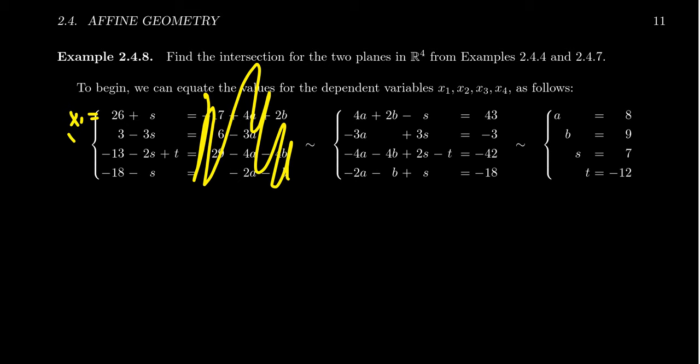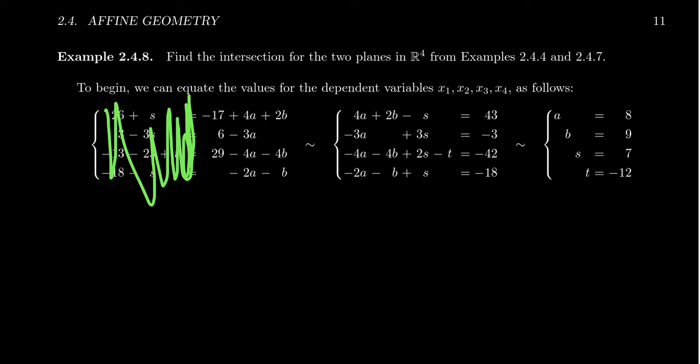Now the next one, in a previous example, we described a plane in the following way. X1 equals negative 17 plus 4A plus 2B. X2 was equal to 6 minus 3A. You have that X3 is equal to 29 minus 4A minus 4B. And then X4 is equal to negative 2A minus 2B. Now, in the previous video, when we did this example, I used the parameters S and T. You'll now see that I've deliberately changed the parameters to be A and B so that there's no confusion.